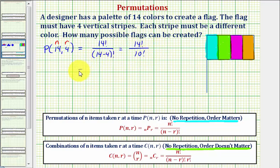So to simplify this, we'll begin to expand 14 factorial. So we'd have 14 times 13 times 12 times 11. Now the remaining factors would be 10 factorial.